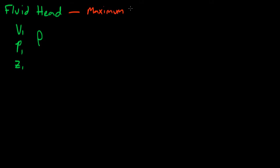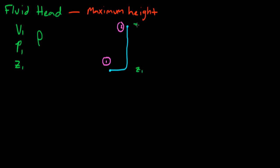The fluid head is the maximum height that the flow can reach, starting at state 1. Remember, this is a conceptual measurement of the fluid's energy, not an actual process that the fluid will experience. We define a system for this conceptual process that involves flow from the initial state along a streamline to a final state at elevation 2. The process is lossless, and the fluid velocity is 0 at Z2.